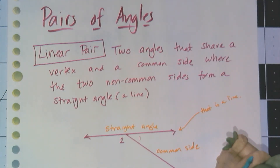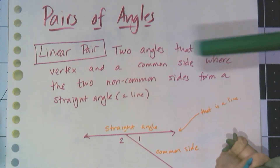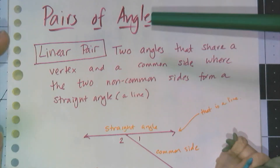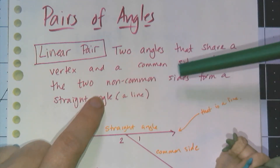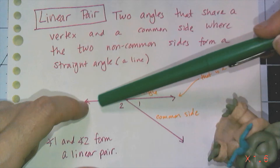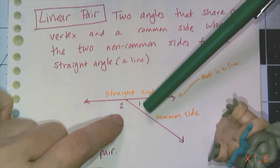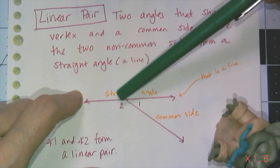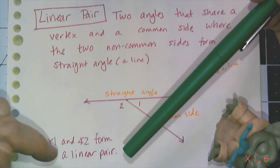Now we're going to talk about significant pairs of angles you'll encounter quite often. The first is the linear pair. A linear pair of angles are two angles that share a vertex and a common side where the non-common sides form a straight angle or a line — that's why it's called a linear pair. You start with a line, pick a point on it, have a ray come off it forming two angles. They share a common side, form a straight line with their non-common sides, and share a vertex. Therefore, angle one and angle two form a linear pair.